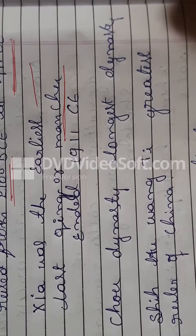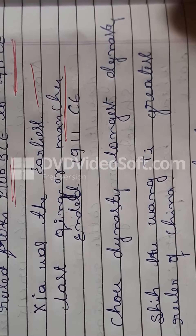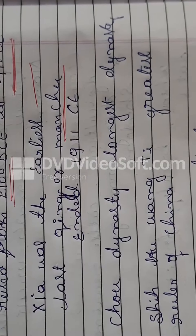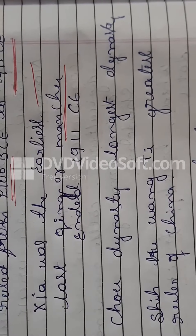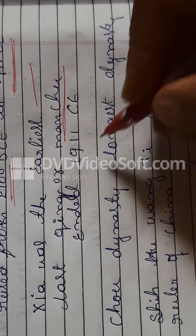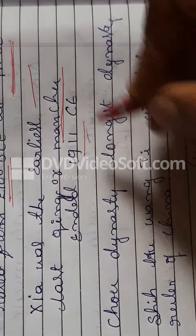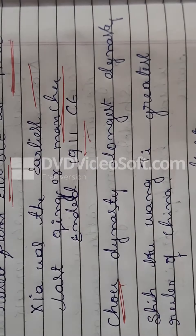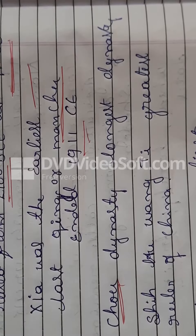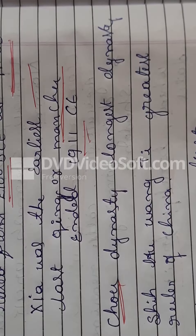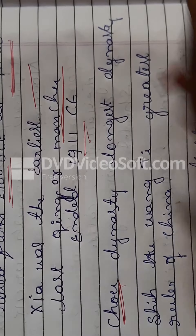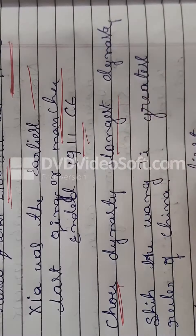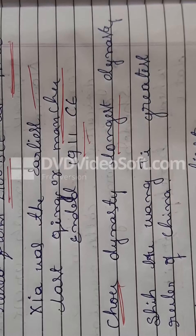The Manchu dynasty was the last dynasty and it ended in 1911 CE. Next was the Zhou dynasty. The Zhou dynasty was the very longest dynasty in Chinese civilization.